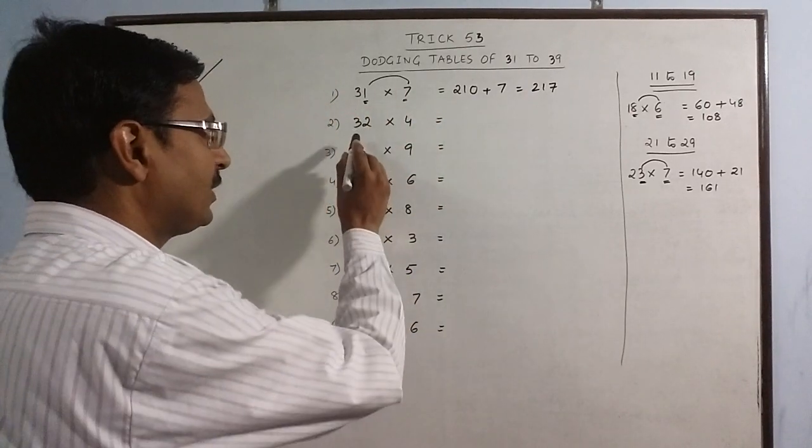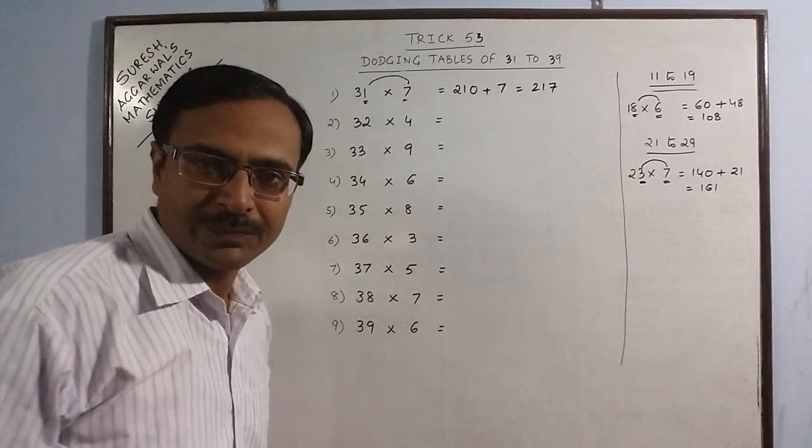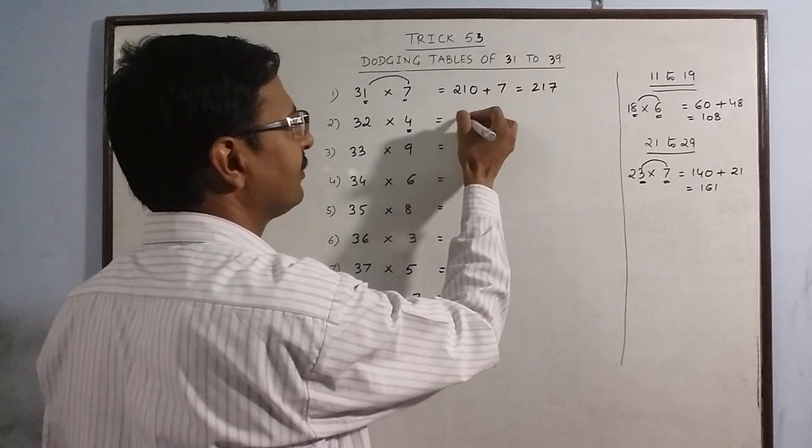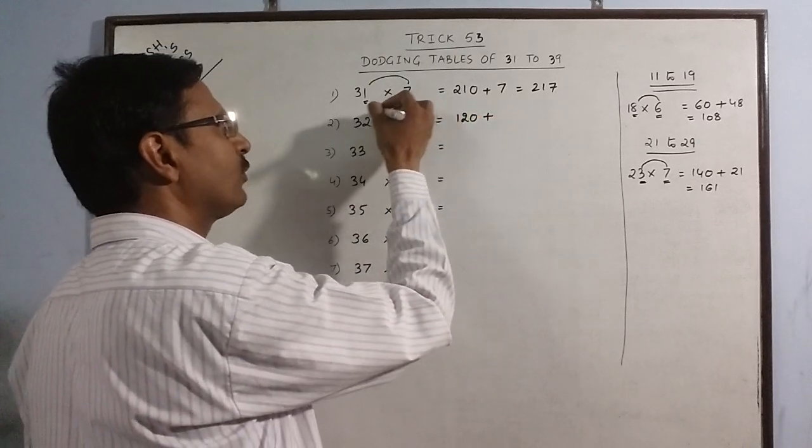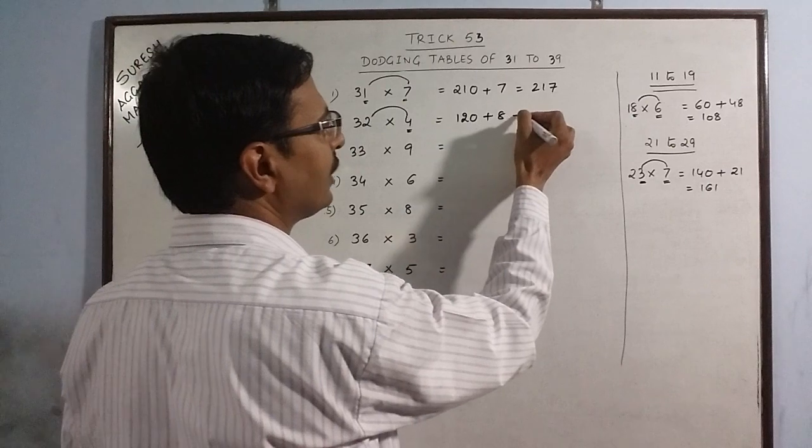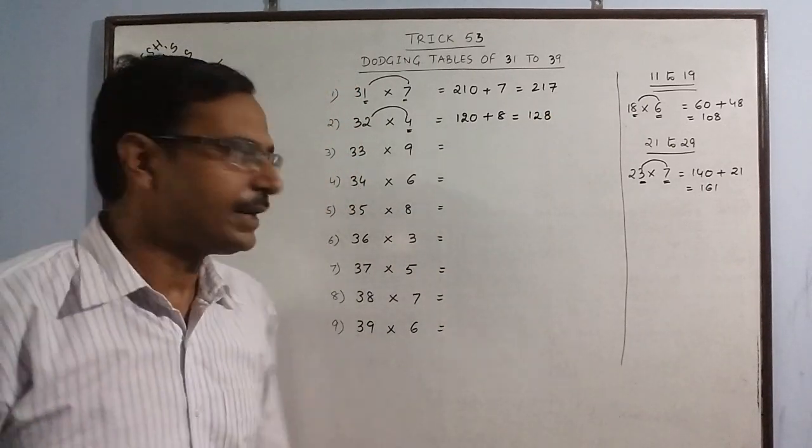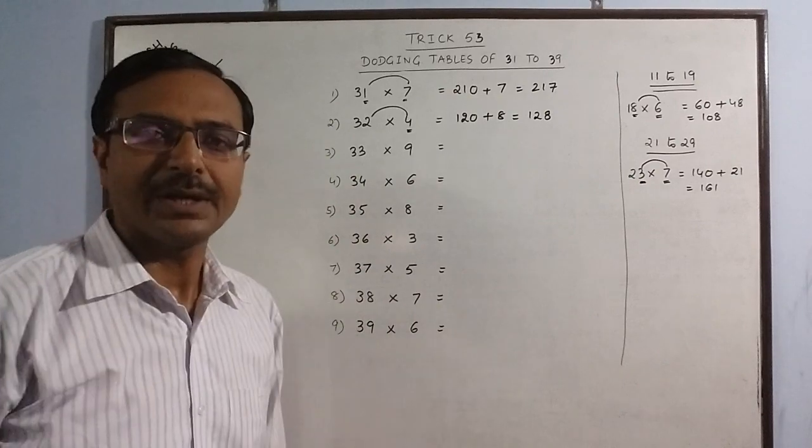Again, we have to multiply 32 into 4. Just write the triple of 4, that is 12, put a 0, and multiply 4 by 2: 8, giving 128. It takes only 2 seconds to write any dodging table from 31 to 39.